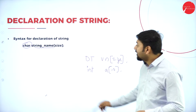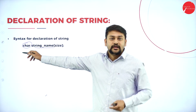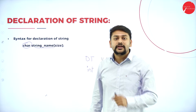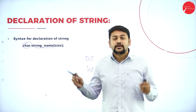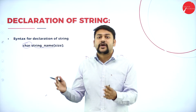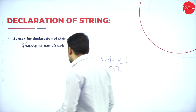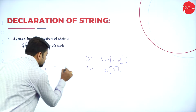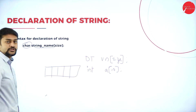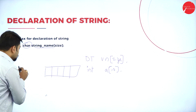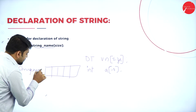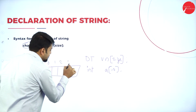Char means character. If I create an array of type character, I will be able to store a string, because a string is a group of characters. You are going to create the array using this syntax. The name of the array is 'string_name' — that is the array name I have taken.